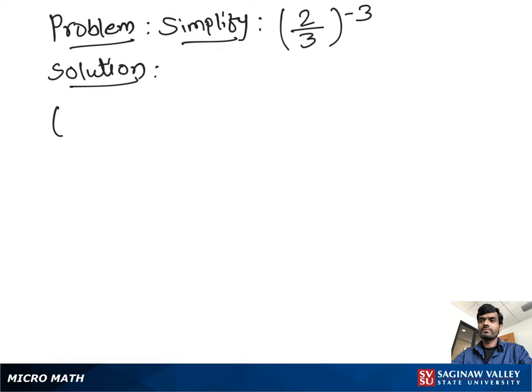Simplify 2 over 3 raised to the power negative 3. First, if we flip the fraction, move 2 to the bottom and 3 to the top, and the exponent sign will be changed, so we get 3 over 2 raised to the power positive 3.